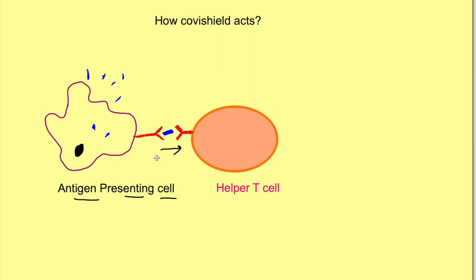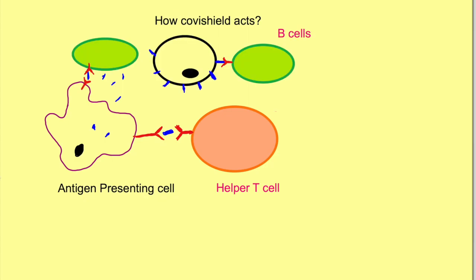This is a signal to the helper T cells that this kind of foreign antigen has come and they need to be active against it. So helper T cells are getting a signal from the antigen-presenting cell. There are also B cells, which get signals not only from the antigen-presenting cells but also from the cells that were expressing spike proteins on their surface due to the adenovirus. The helper T cells, as the name suggests, help the B cells — recognizing the same antigen, they send signals to the B cells and activate them further.